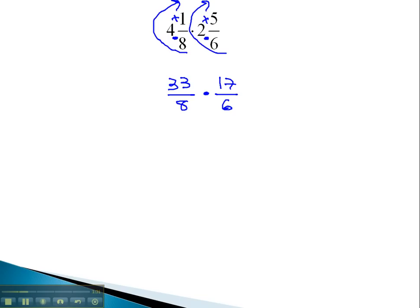We're now ready to multiply, and we remember that with multiplication and multiplication only, we're allowed to reduce at the beginning of the problem. Diagonally, 33 and 6 are both divisible by 3. 33 divided by 3 is 11, and 6 divided by 3 is 2. I'm gonna write that in a different color so it shows up better.